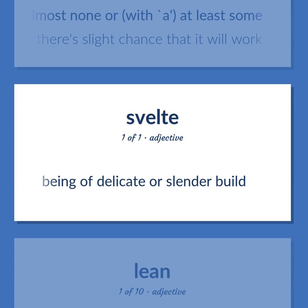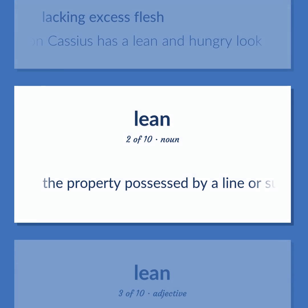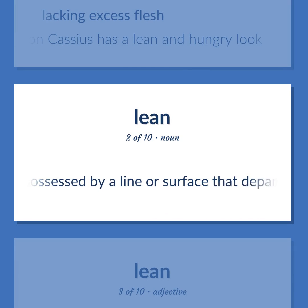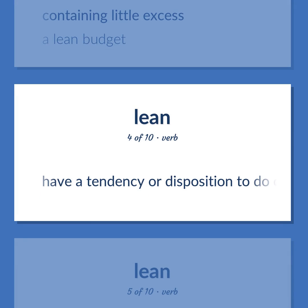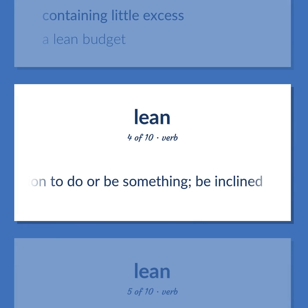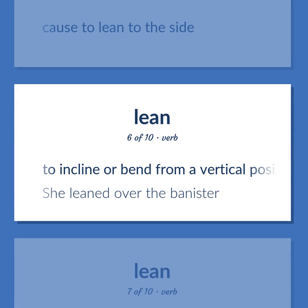Lean. Definition: Being of delicate or slender build. Definition: Lacking excess flesh. Example: Jan Cassius has a lean and hungry look. Definition: The property possessed by a line or surface that departs from the vertical. Definition: Containing little excess. Example: A lean budget. Definition: Have a tendency or disposition to do or be something; be inclined. Example: Cause to lean to the side. Definition: To incline or bend from a vertical position. Example: She leaned over the banister.